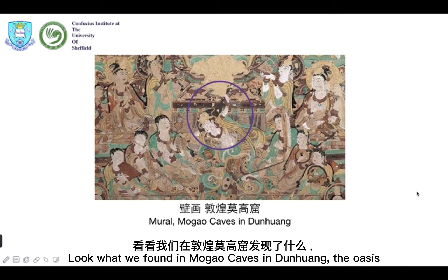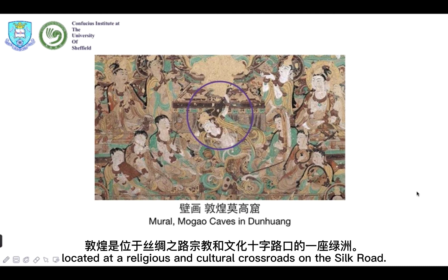Look what we found in Mogao Caves in Dunhuang, the oasis located at a religious and cultural crossroads on the Silk Road.